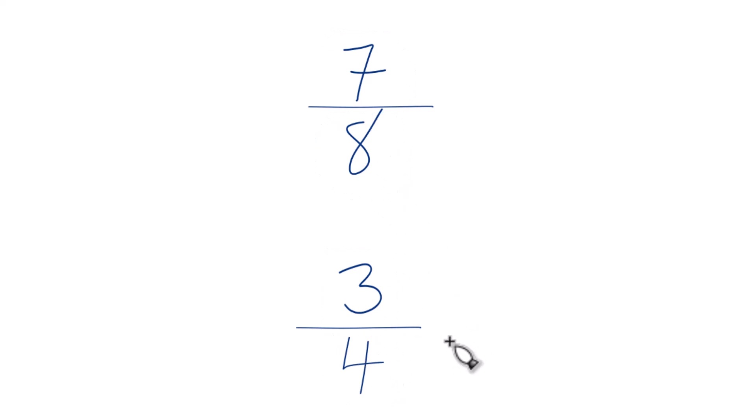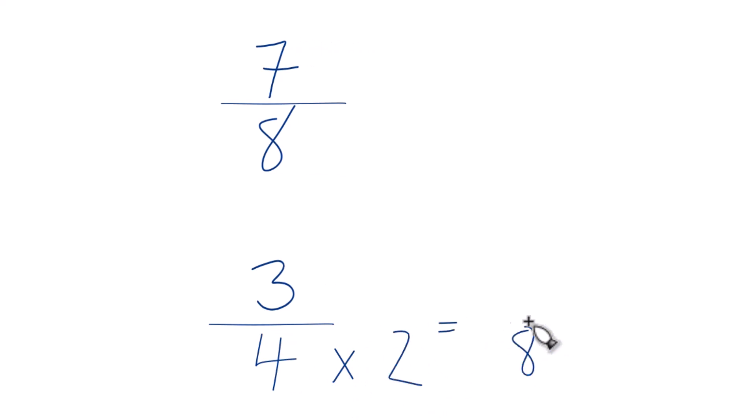So 4 goes into 8 two times. Why don't we just multiply 4 times 2 down here? 4 times 2 is 8. Then up here we already have 8 in the denominator. We're just going to keep this as 7 eighths like that.